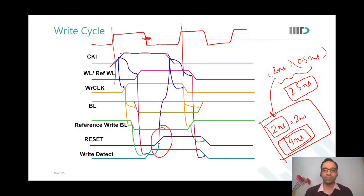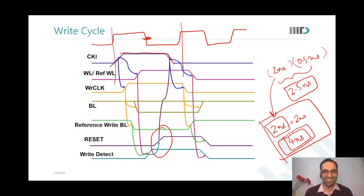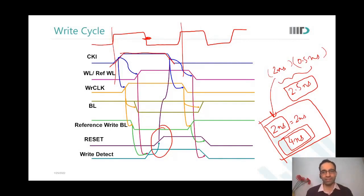A student asks: the reference bit line appears much faster than the bit line in the diagram, so doesn't that defeat the purpose? The instructor explains: after write detect comes, there is still enough time before the word line gets deselected, and we keep that margin. Moreover, this diagram is just a cartoon — it is fairly representative of sequencing, but the exact delays between signals would be different. This is a sequencing diagram, not a precise timing diagram.